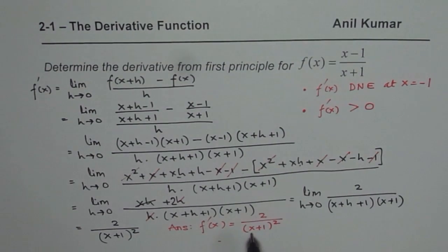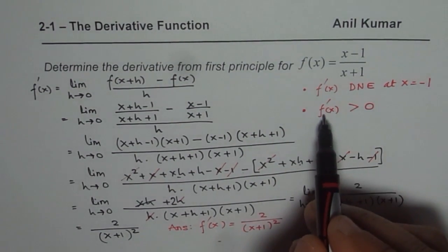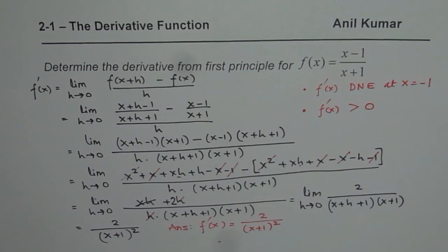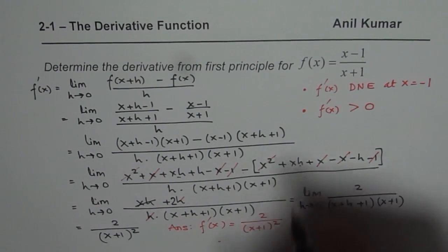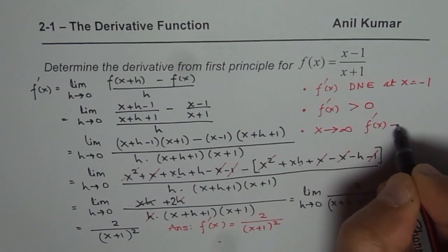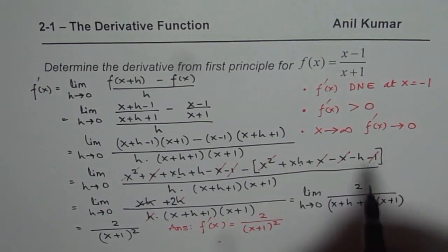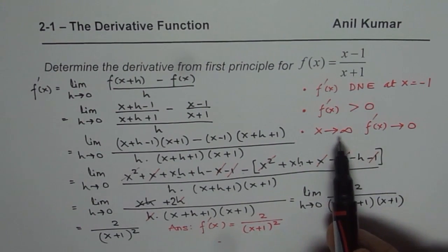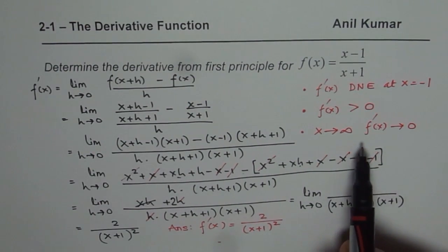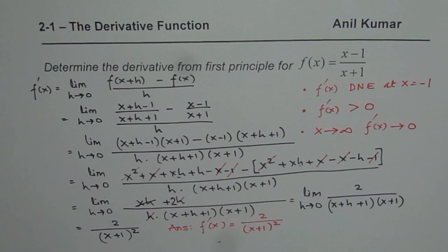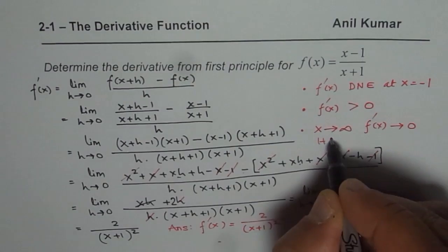Since the derivative is always positive, any tangent drawn to this curve will always have a positive slope. Also, when x approaches infinity, f dash x will approach 0, indicating a horizontal asymptote for the derivative. The function itself approaches a horizontal asymptote of y equals 1 when x is very large.